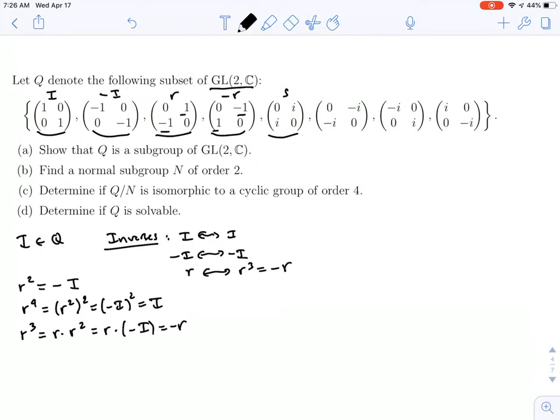Next we'll call this one S. And you can see the one after that is going to be a negative S. And S squared is also negative I. And so the exact same thing is going to hold. S will have, as its inverse, negative S.